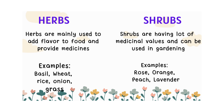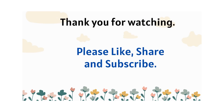Examples of herbs are basil, wheat, rice, onion, and grass. Examples of shrubs are rose, orange, peach, and lavender. Thank you for watching. Please like, share, and subscribe to Kidowing Tutorials.